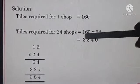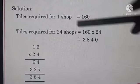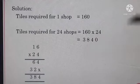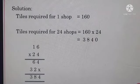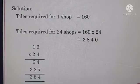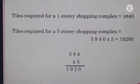384 and then this 0 will be taken in the product to the right side. So the tiles required for 24 shops, 3840. Now we found that for 24 shops we need 3840 tiles. Now 24 shops are on 1 story and we need to calculate for 5 stories. Understood?